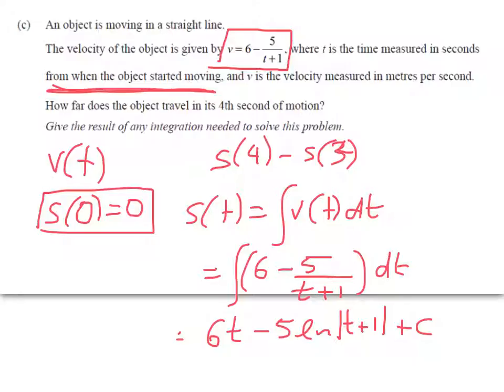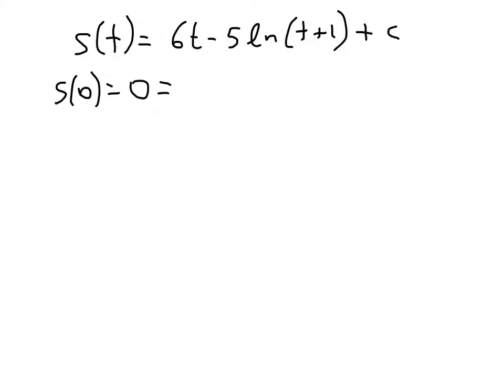Right, I'm going to use a new slide because we need to figure out what the c is, and then work out these two things here, s at 4 and s at 3. So we've got s of t is equal to 6t minus 5 log t plus 1. Now I'm losing my absolute value sign there, by the way, because we know that in this question t is always going to be positive, so I don't need to worry about the absolute values. Plus c, and we have s of 0 equals 0 equals 6 times 0 minus 5 log 1 plus c. So 0 equals 0 minus 0 plus c. c equals 0.